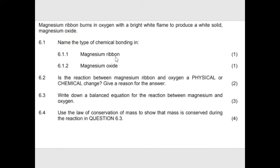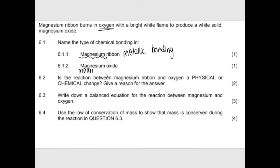Magnesium ribbon burns in oxygen with a bright white flame to produce white solid magnesium oxide. The question asks for the type of chemical bonding in the magnesium ribbon. Magnesium is a metal, so that would be metallic bonding — between positive ions and delocalized electrons within the metal. For magnesium oxide, magnesium is a metal bonding with oxygen, which is a non-metal. When a metal bonds with a non-metal, we have ionic bonding.